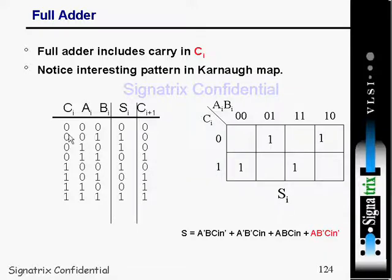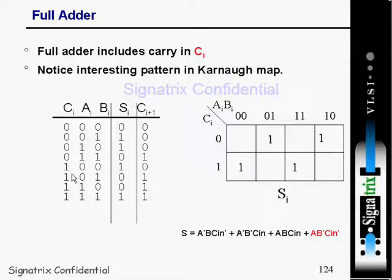With three inputs, eight possible combinations are possible. You can see the eight possible combinations here, and based on that, the sum and carry have been calculated. After calculating the sum and carry, a K-map is implemented to derive the Boolean expression.